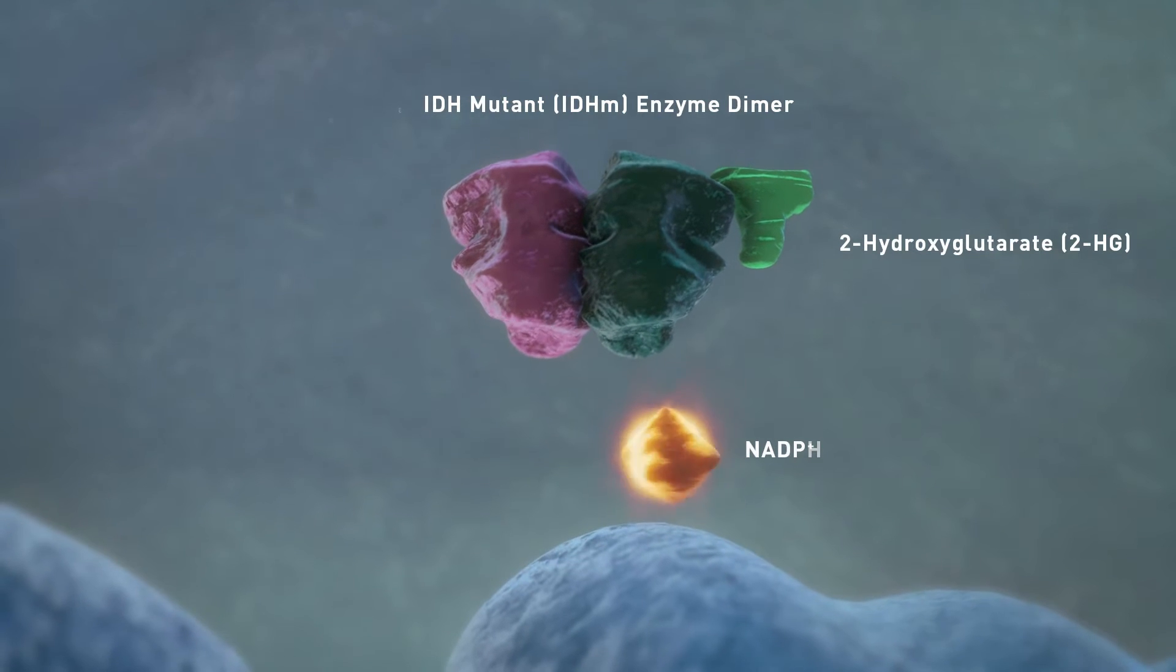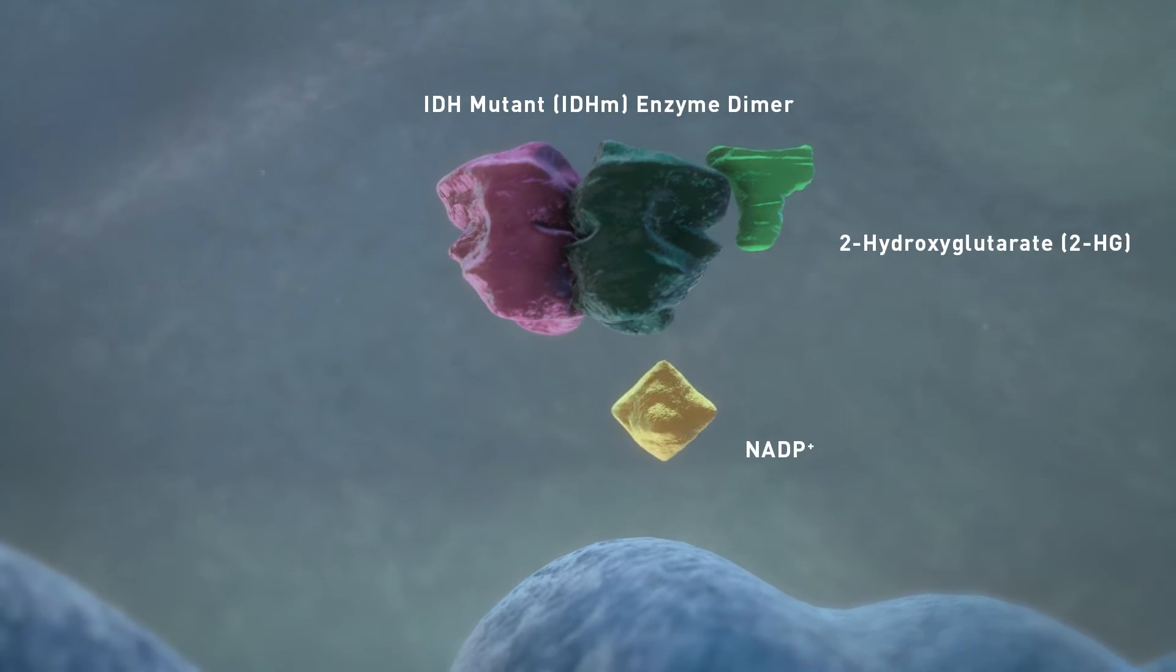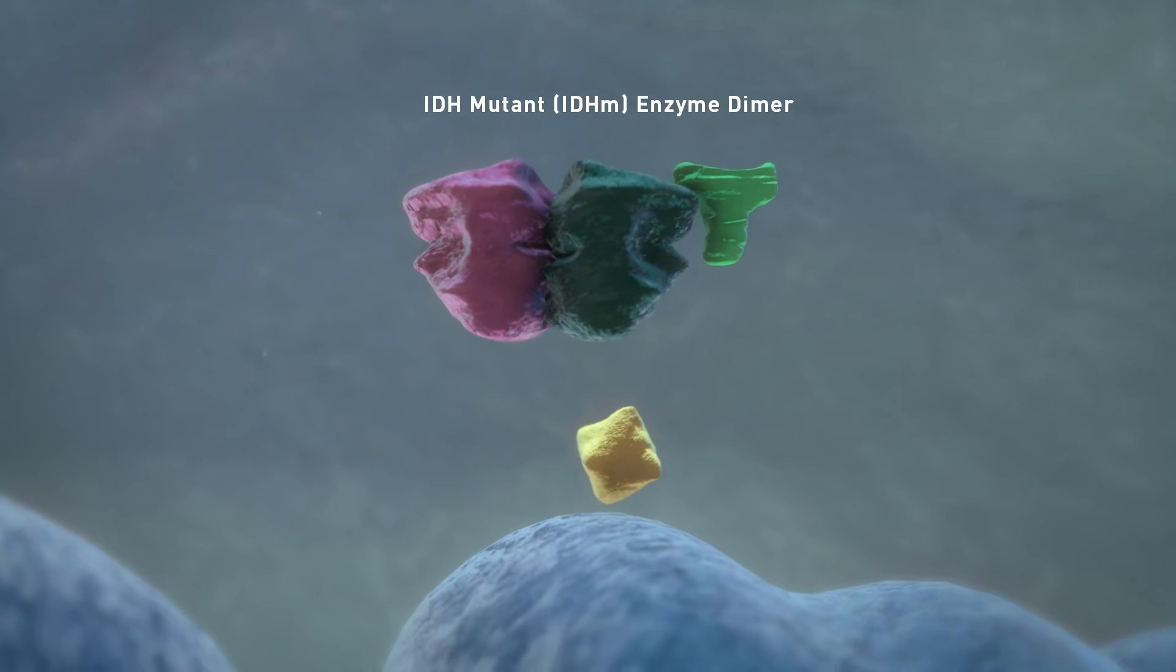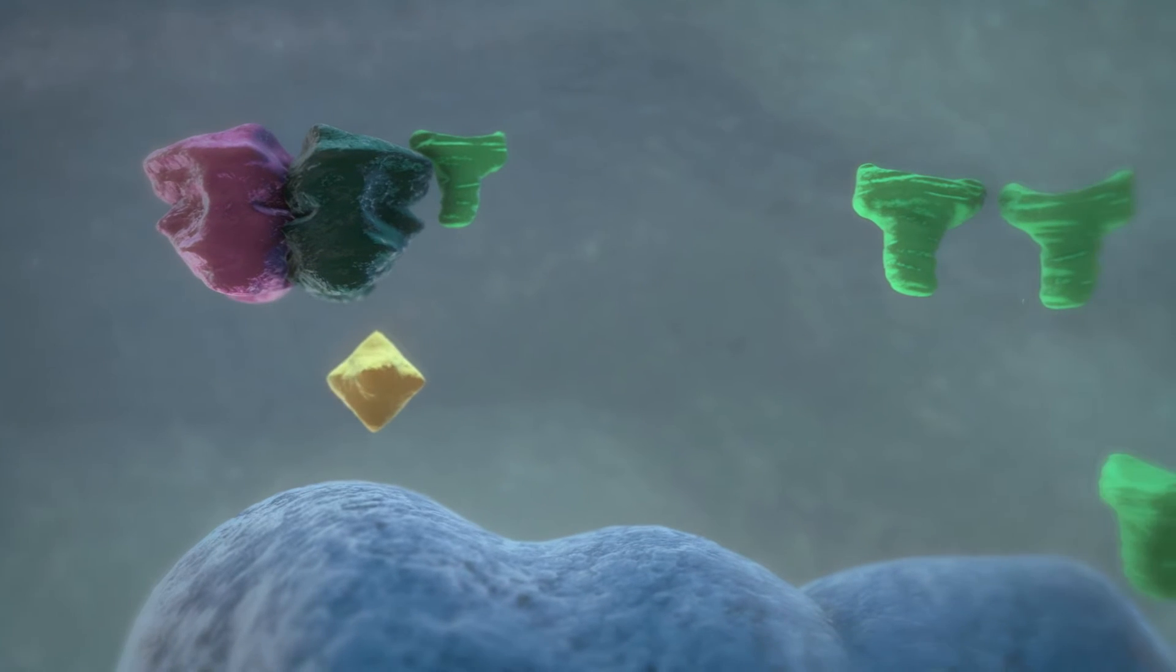This reaction consumes NADPH, which may increase reactive oxygen species and thus promotes oncogenesis. This leads to an accumulation of 2-HG levels within the cell.